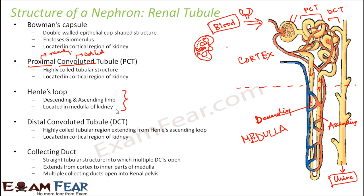Another important thing regarding Henley's loop: I said the Henley's loop extends into the medulla — it goes deep inside the medulla — however that is not always the case. In certain cases it goes deep into the medulla; in other cases it doesn't go that deep and remains only in the cortex. Based on whether the Henley's loop is long or short, nephrons are classified into two types.